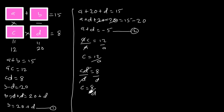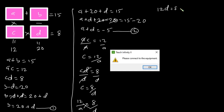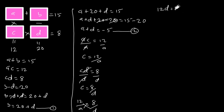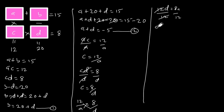We have C in both expressions, so we can equate them: 12 divided by A is equal to 8 divided by D. Cross multiplying gives 12D is equal to 8A. Dividing each side by 12 gives D is equal to 2A over 3.